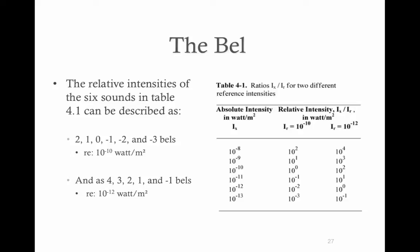So we just drop the 10, because we assume that the 10 is there. The 10 is the reference. Like the base, the 10 is always the base. When we change the reference to 10 to the negative 12, notice our relative values change. So they now become 4, 3, 2, 1, 0, and negative 1.